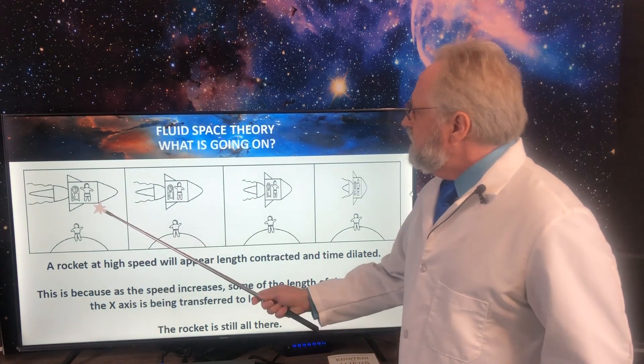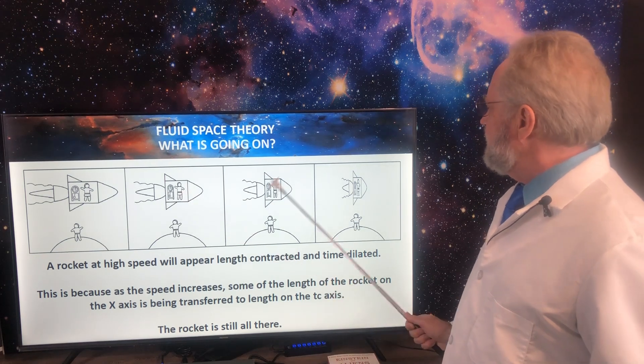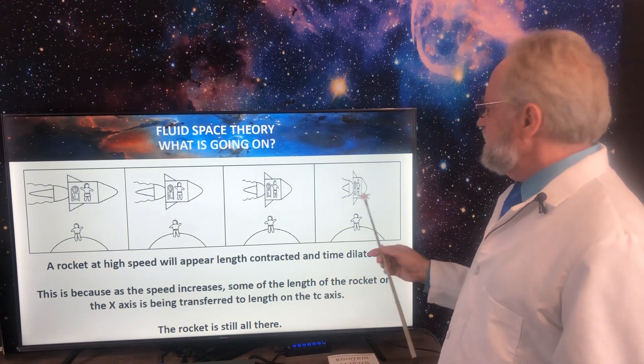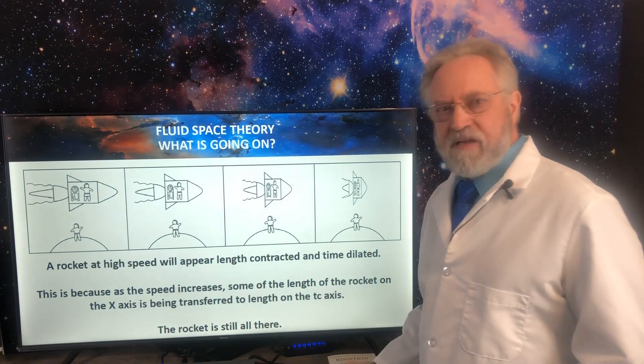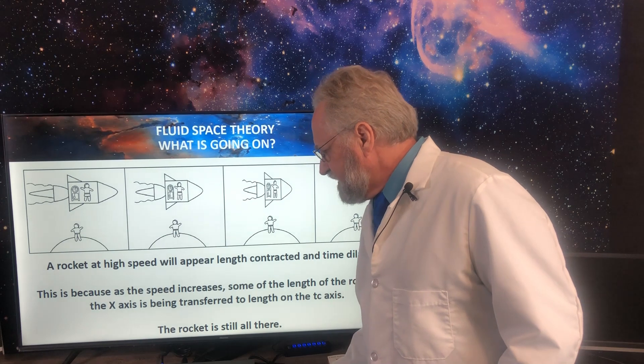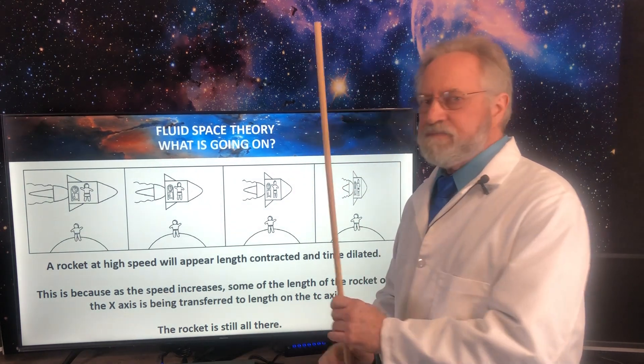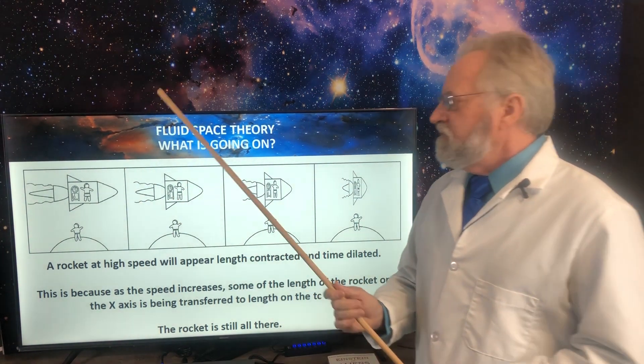So now when Ricky flies past and she goes faster and faster and faster with each pass, she becomes more length contracted and more time dilated. Now I'm going to switch to my wooden pointer so that you know I'm not collapsing the pointer.